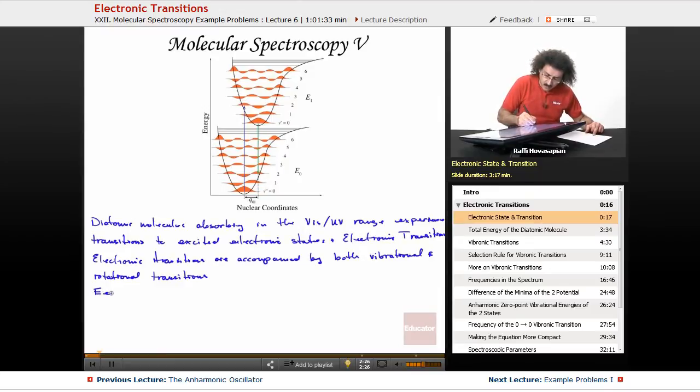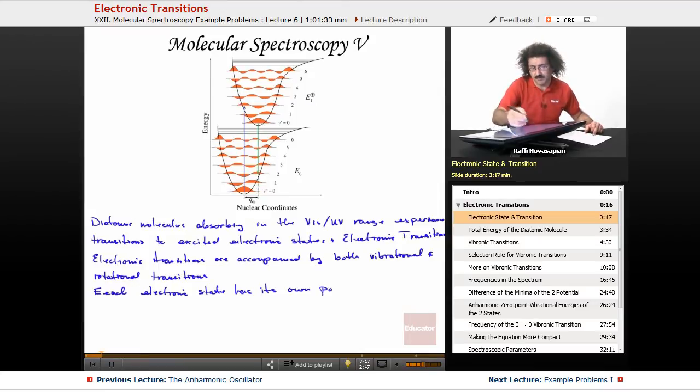In general, the rotational transitions we're not going to worry about because they're reasonably insignificant. Now, very, very important, each electronic state has its own potential energy curve. That's what you see here. This is the ground state. This is the first excited state, or they say E1. It could be any of the excited states. Anything above the ground state has a potential energy curve. It has its own set of vibrational energy states. And the excited electronic state, this one right here, the one on top, it has its own set of vibrational energy levels.